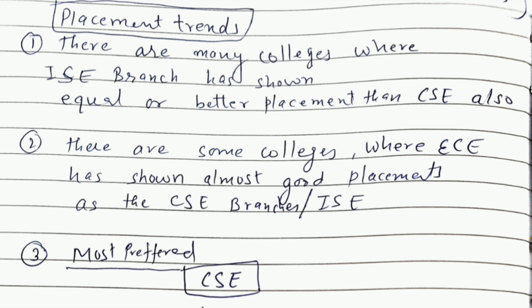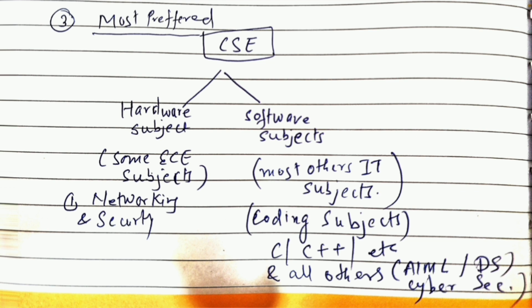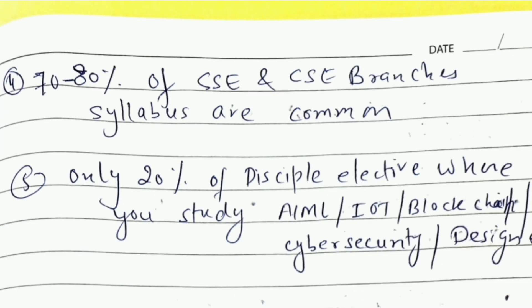The most preferred branch as of now is CSE core, and I'll explain why. From the name itself — Computer Science and Engineering — it is a mix of two streams: the science stream, which is computer science, and engineering. IT industry is about hardware plus software, and this branch covers both. Initially you are taught hardware subjects like networking and security, and then there is a good balance of software subjects — coding subjects, non-coding subjects like modeling, artificial intelligence, machine learning, data science, and cyber security. That is why this branch is preferred — it has all of this in a good mix.